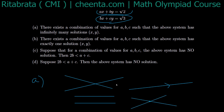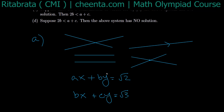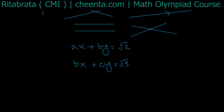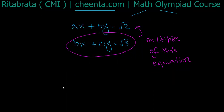So infinitely many solutions means these two equations are the same — that is, one equation is a scalar multiple of the other. Say by multiplying constant K with the first equation we get the second equation.